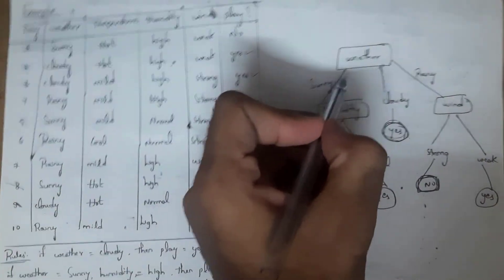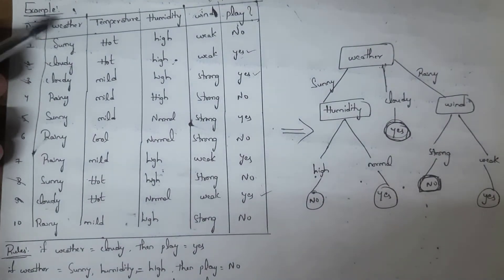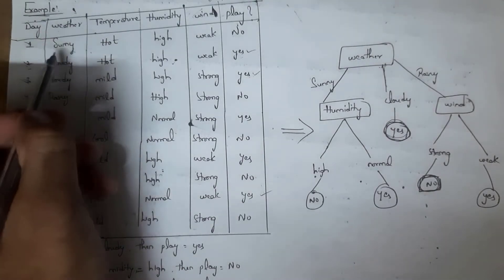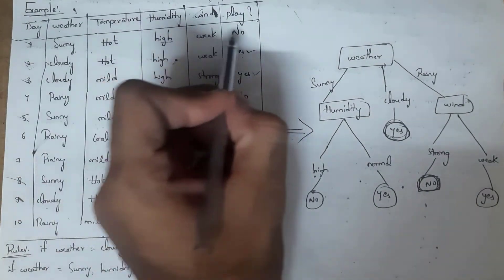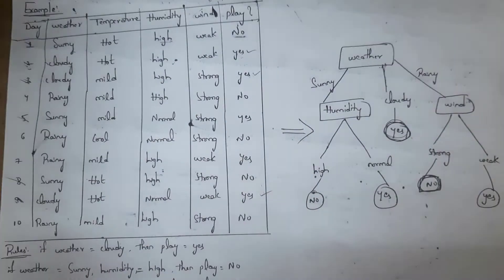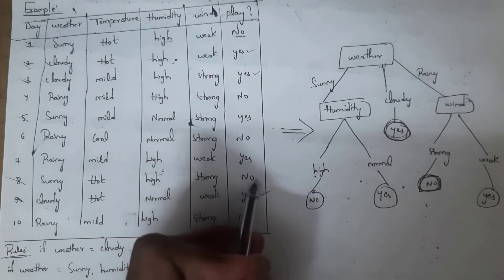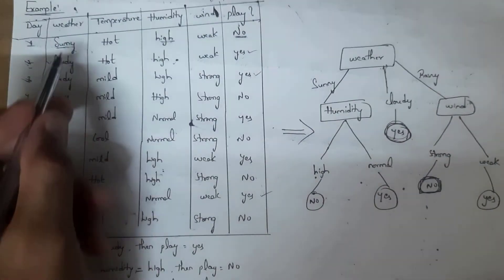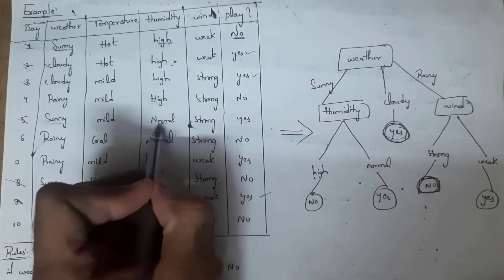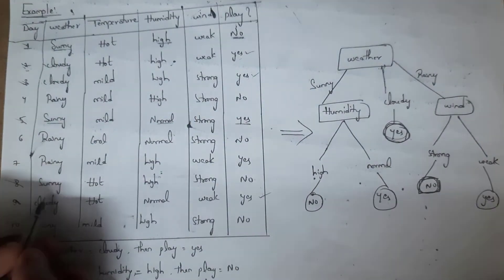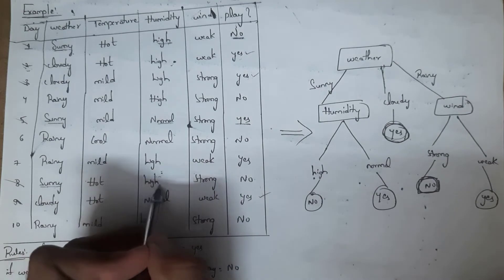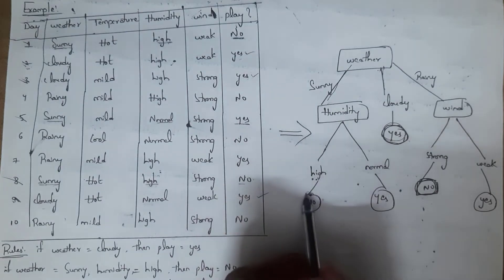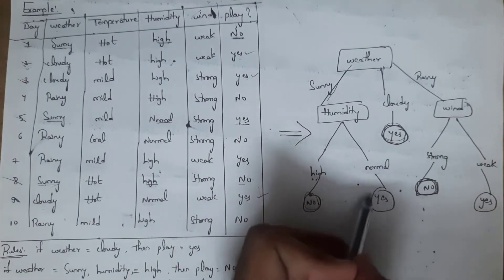For weather condition sunny, sunny is repeated three times — day 1, day 5, and day 8. Whenever weather condition is sunny and humidity is high, the person will not play the game, so result is no. Whenever humidity is normal, the person will play the game, so result is yes. In day 1 weather is sunny and humidity is high — result is no. In day 5 weather is sunny and humidity is normal — result is yes. In day 8 weather is sunny and humidity is high — result is no.